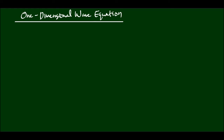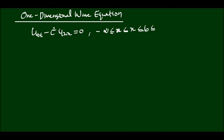In this video, we are going to start a new topic: the one-dimensional wave equation. A homogeneous one-dimensional wave equation has the general form Utt minus C squared Uxx equal to 0, where negative infinity is less than or equal to A, less than or equal to X, less than or equal to B, less than or equal to infinity, and T is greater than 0, where C is a real number other than 0.